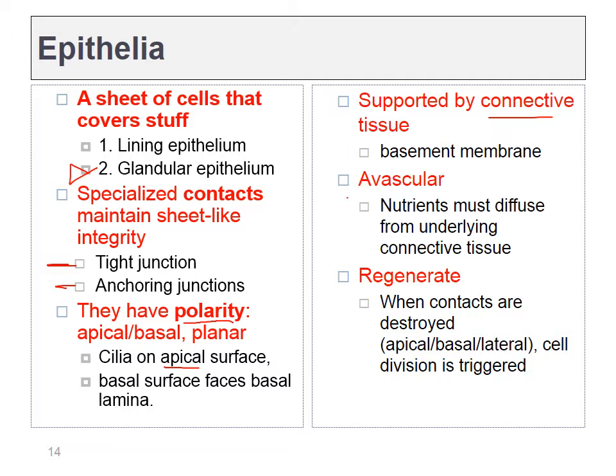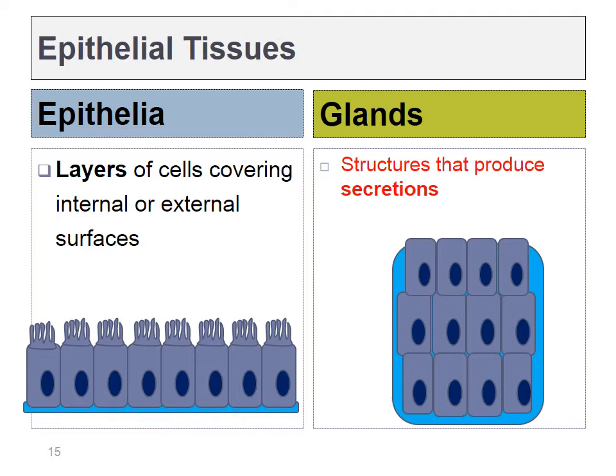Epithelia are typically avascular, meaning they do not have their own blood supply, and must rely on diffusion of nutrients from below. Because diffusion is not very fast, epithelia are always very thin. One thing epithelia do really well, however, is regenerate. When damaged, they can repair that damage quickly and on their own without requiring stem cells — which is different from many other tissues in the body.